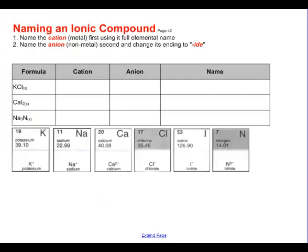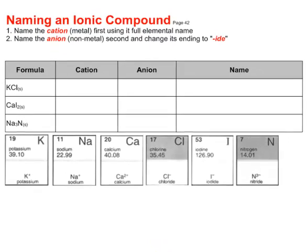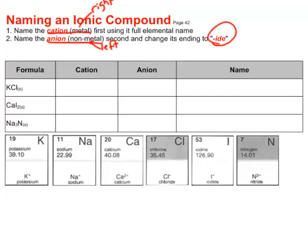If we have a look at how we name it, it's fairly straightforward. We name the cation, or the metal, first. This is coming from the right-hand side of the periodic table. And we name the anion, or the non-metal, second. This is coming from the left-hand side of the periodic table. We also change the ending of the name of the anion to -ide.